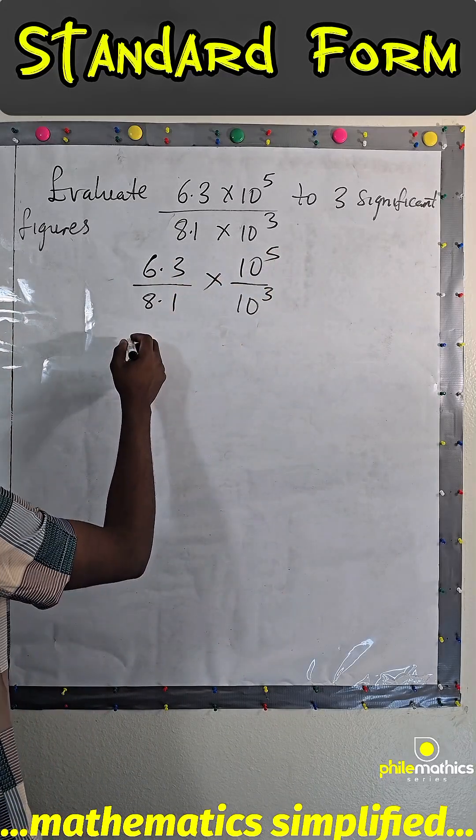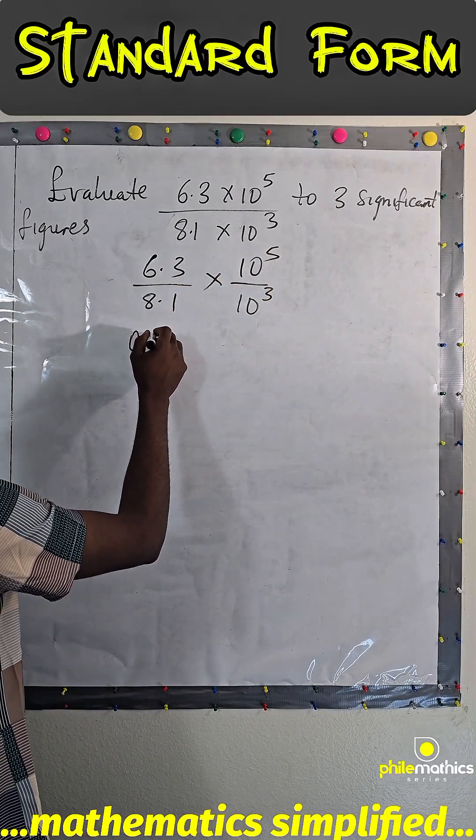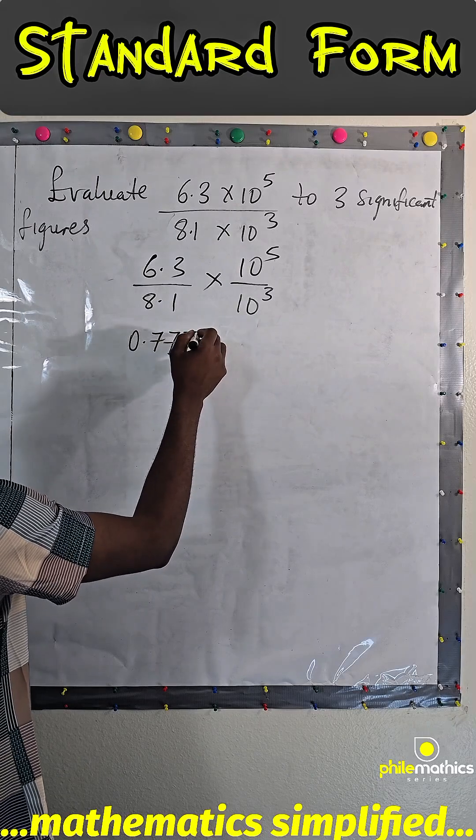If we divide this, this would be 0.777 and so on.